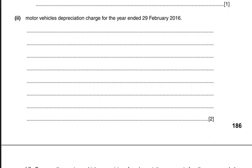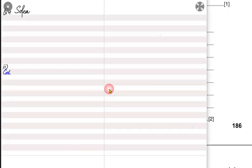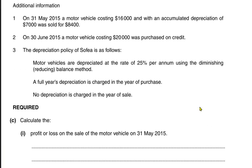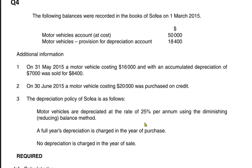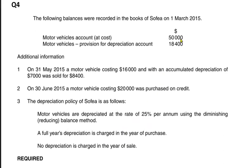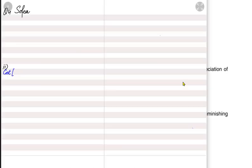Let me quickly recap how to calculate depreciation. The policy is reducing balance at 25%. In this method, we always apply the 25% rate on the net book value. The cost at the start of the year is 50,000, so that is our starting point.